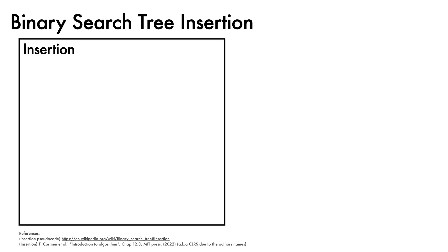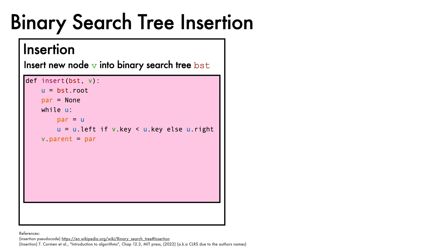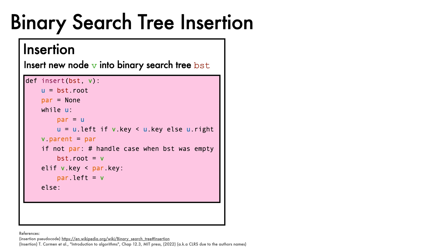We next come to the topic of insertion, and in particular, how to insert a new node into a binary search tree. The insert function takes two arguments: the binary search tree itself, and the node v to be inserted. We define a variable u to point at the root of the tree, and initialize a par variable to track its parent. We then use a while loop to descend down the tree, at each step assigning par to u, and then updating u to point at its left child if v should be to its left, and otherwise to its right child. Once we've gone off the end of a leaf at the bottom of the tree and u has become none, par will point to a leaf node, and we assign v's parent to this leaf node. We then handle the edge case where par is none, which implies that the binary search tree was empty, and simply set v to be the root. Else, if v's key is smaller than the leaf node, we insert it as the left child, otherwise we insert it as the right child.